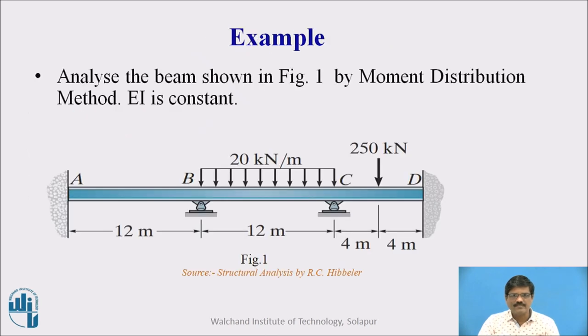Let us take an example. Analyze the beam as shown in figure 1 by moment distribution method and EI is constant. So we have this typical beam here where A and D ends are fixed and at B and C we have an interior support. This beam is subjected to loading of UDL 20 kN on span BC and a point load of 250 kN at the center of CD span. Now let us see how to analyze this indeterminate beam using moment distribution method.